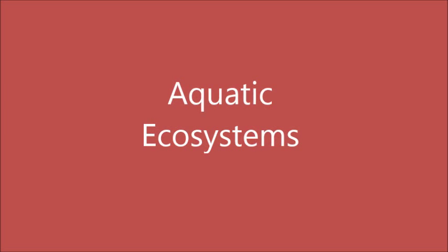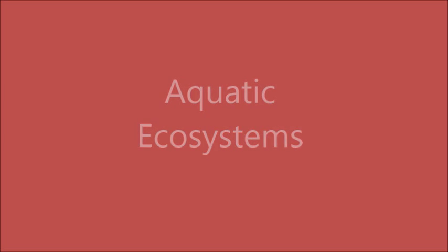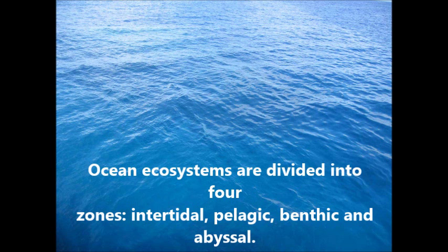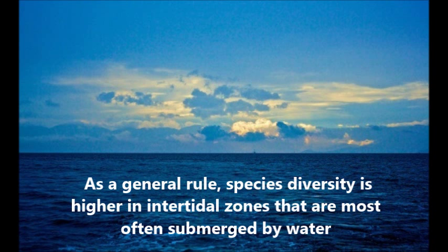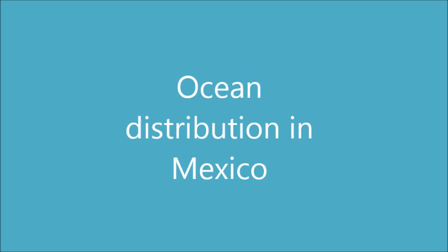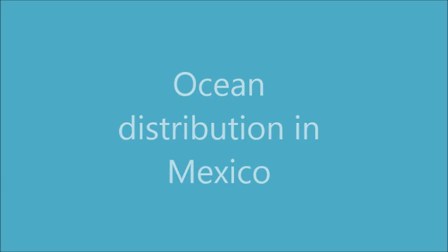Aquatic Ecosystems. Oceans. Ocean ecosystems are divided into four zones: intertidal, pelagic, benthic, and abyssal. As a general rule, species diversity is higher in intertidal zones that are most often submerged.